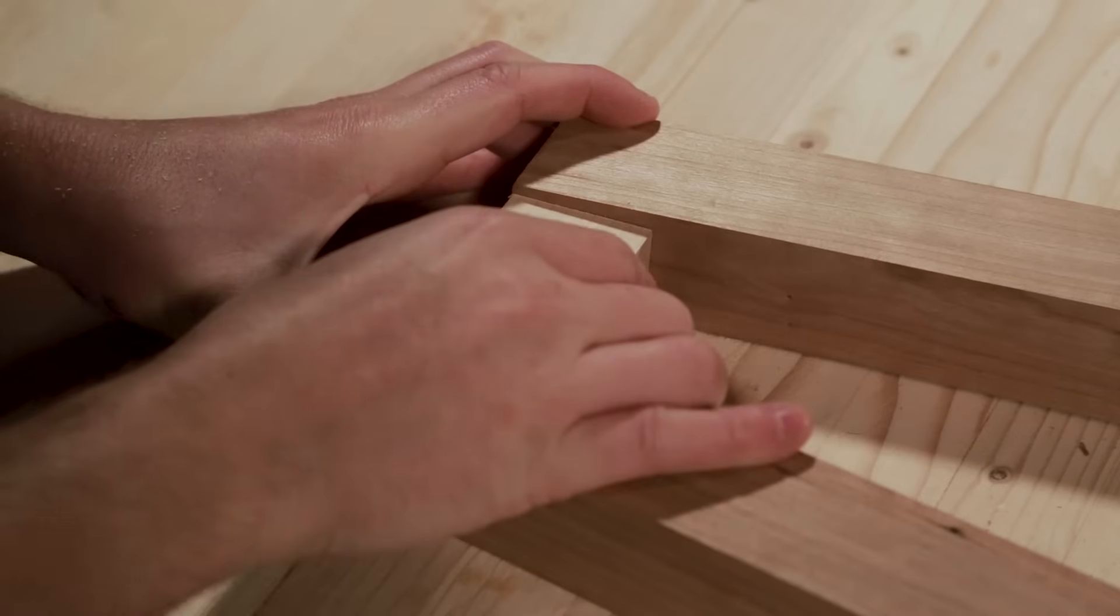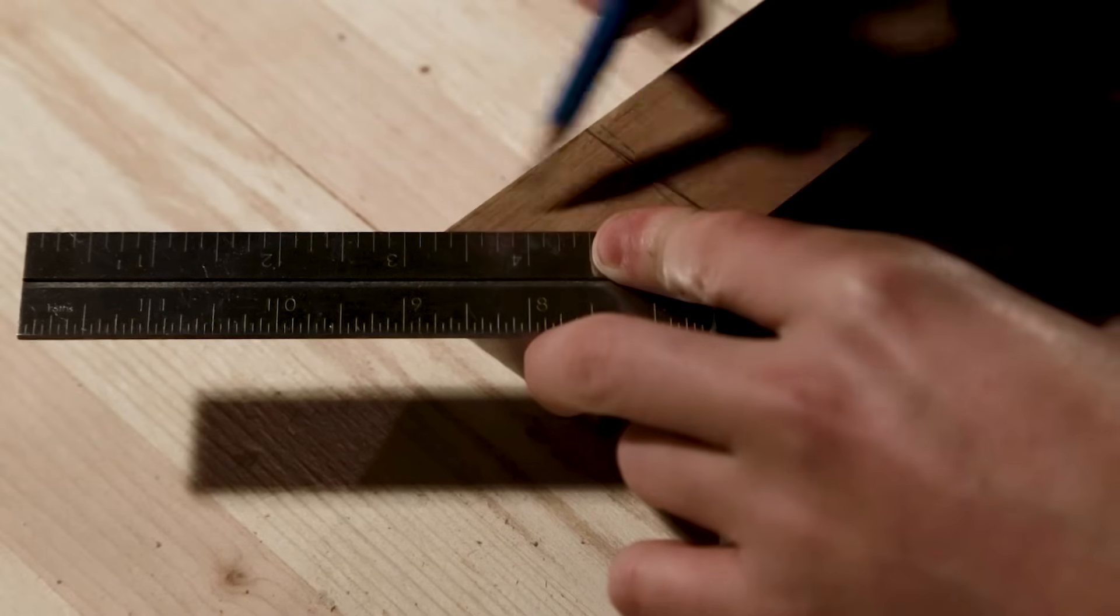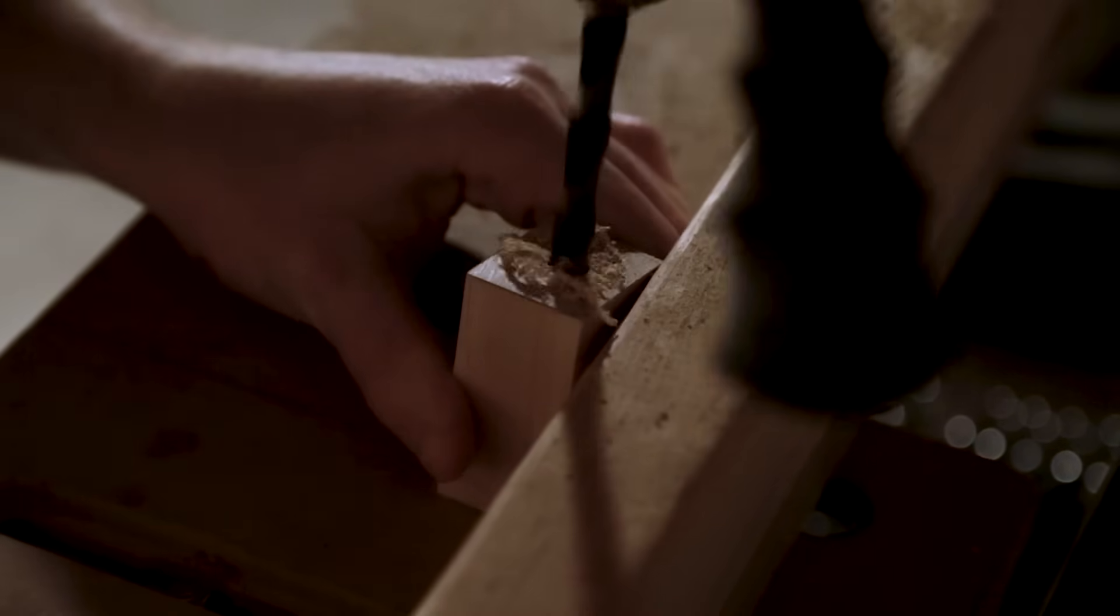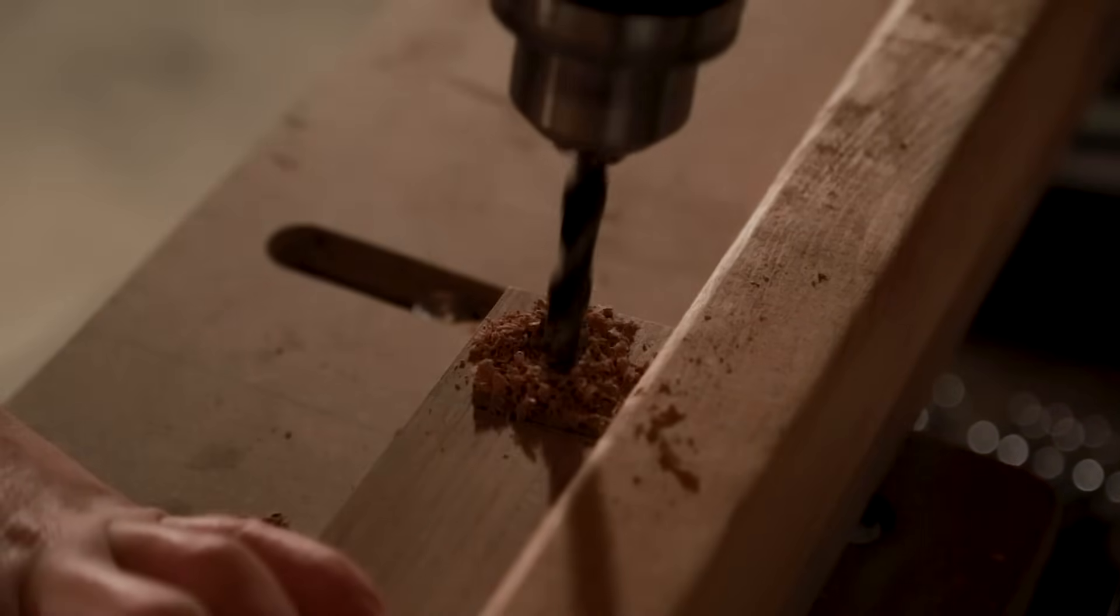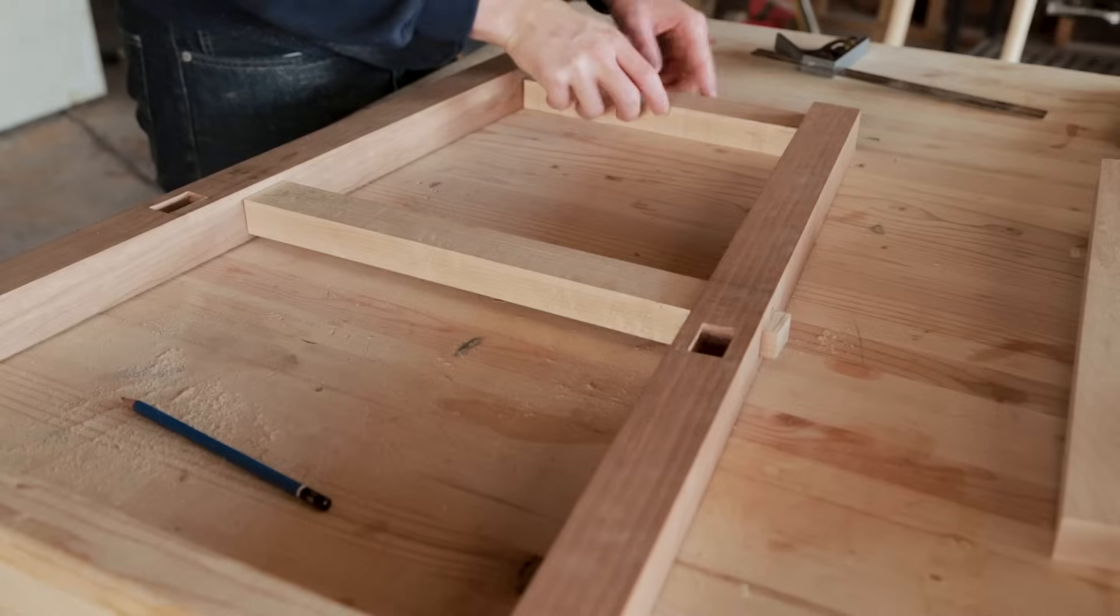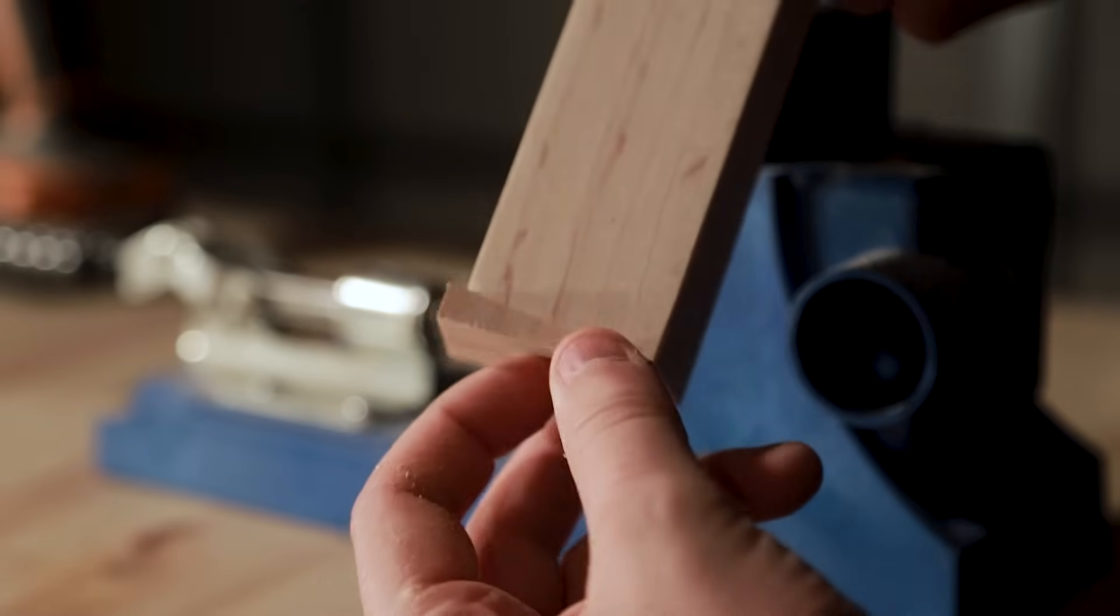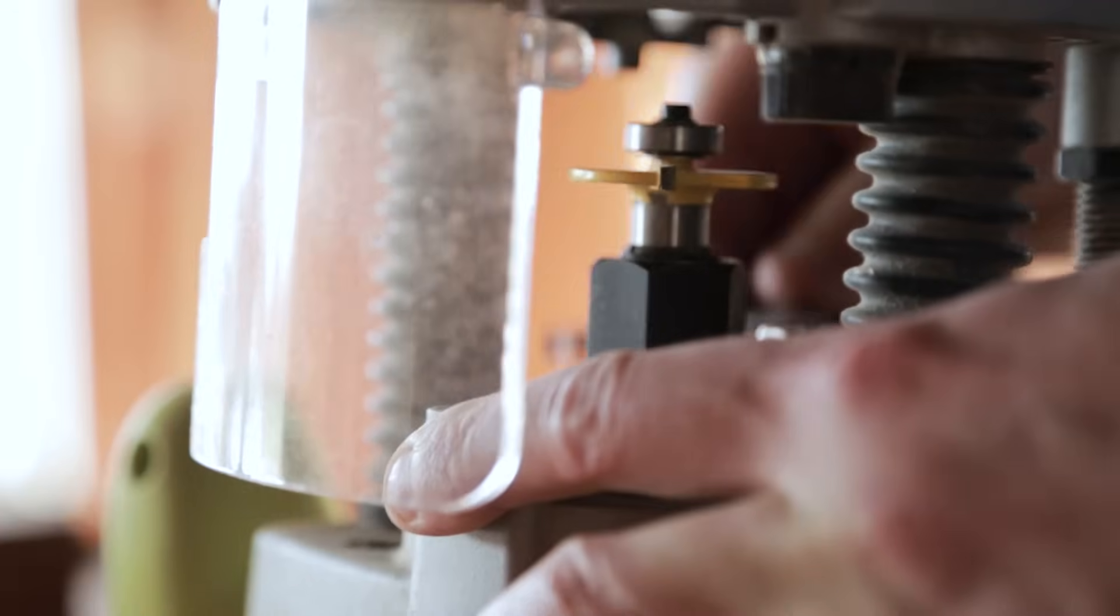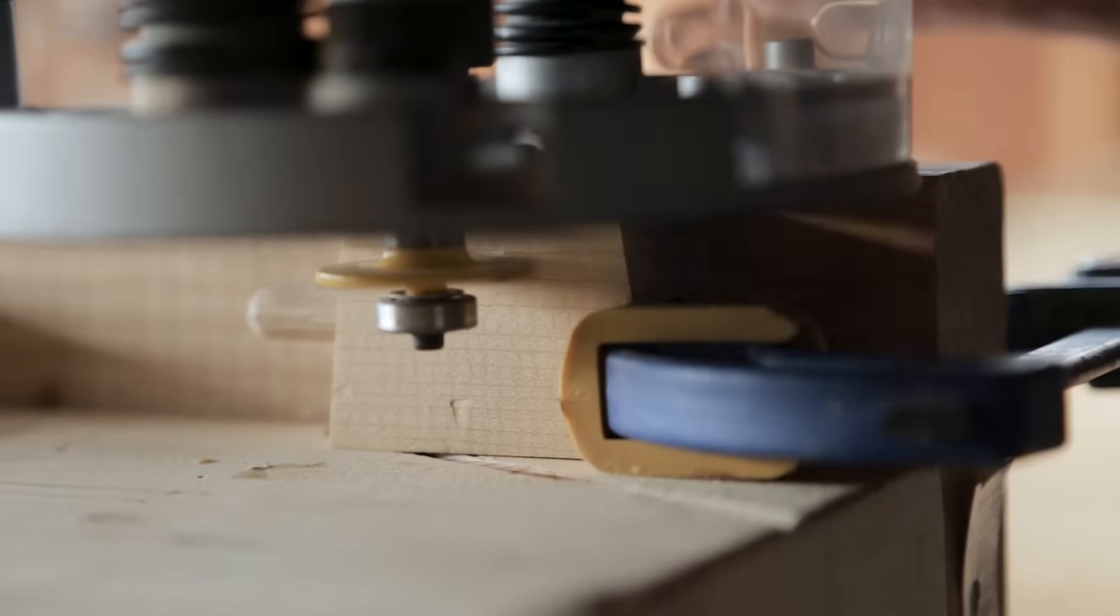I cut the top rails to size and found the center and drilled for the dowels. For the pocket holes I used a seven degree wedge to drill the holes in straight. I will be attaching the tops with table top fasteners. And to cut the slots I used a biscuit cutting bit in my router.